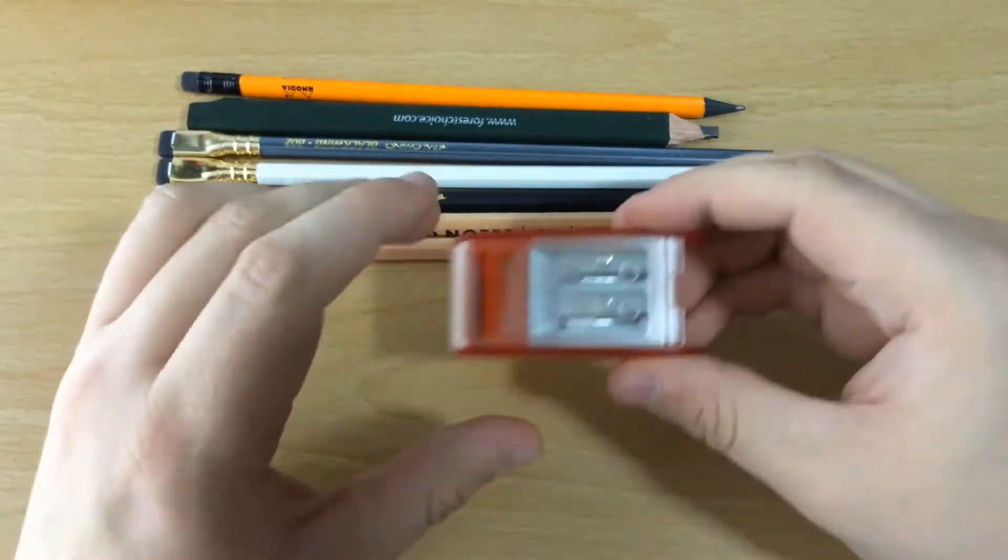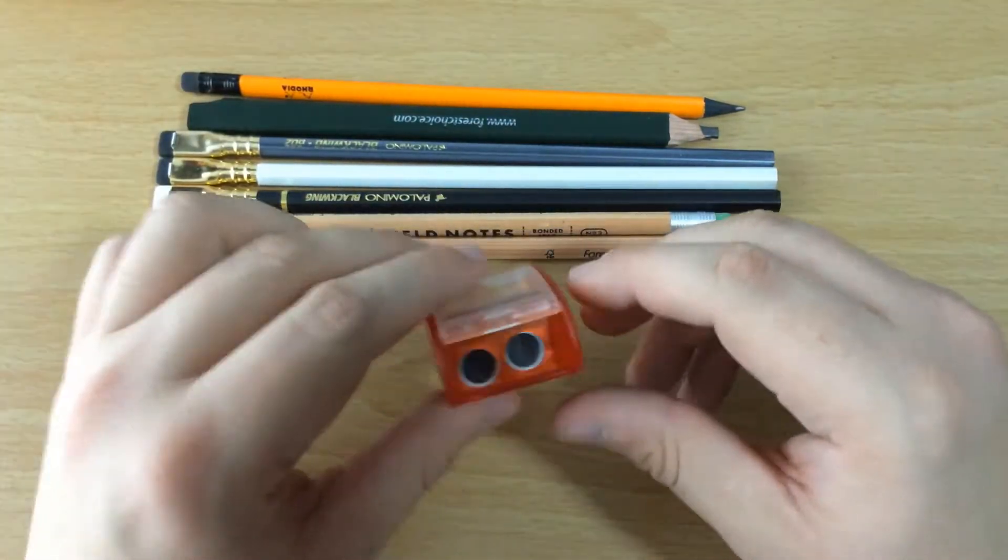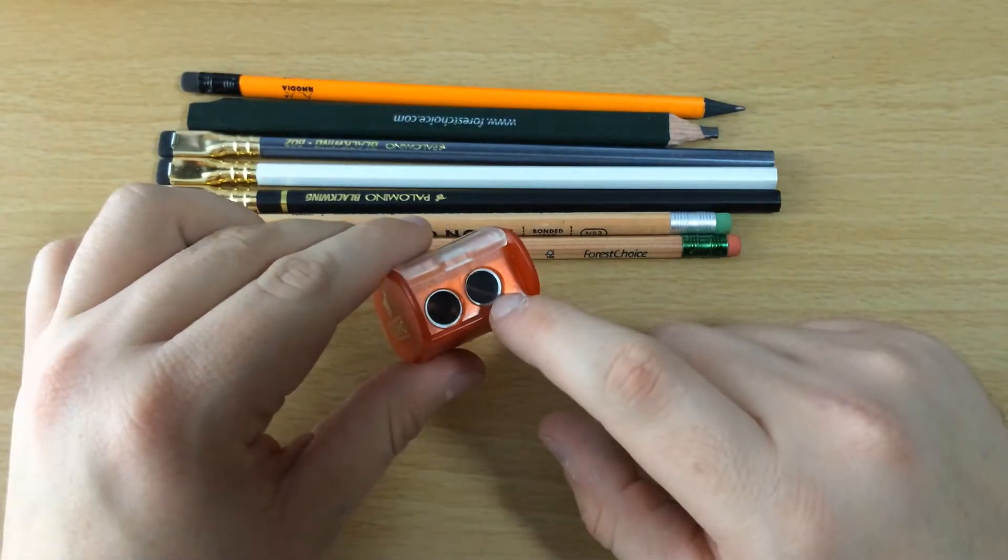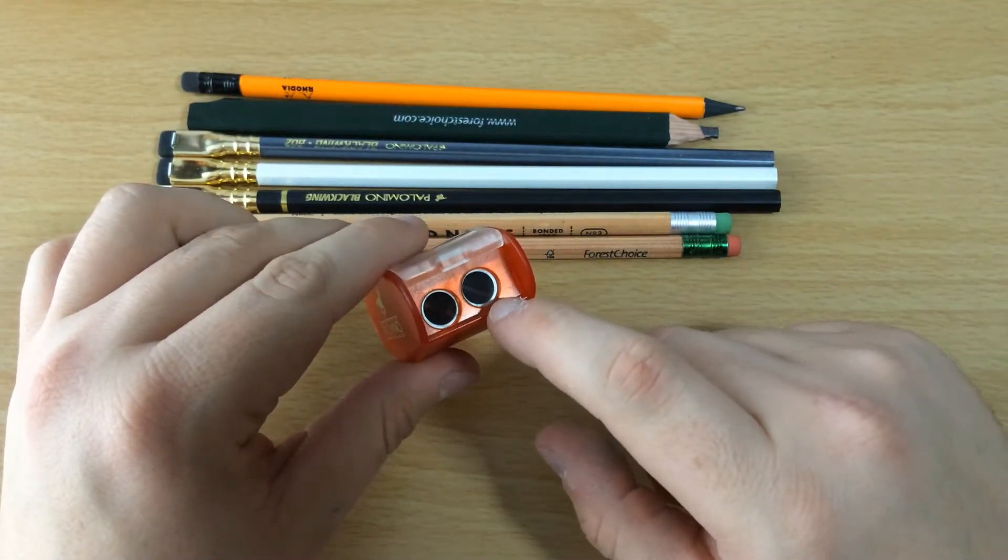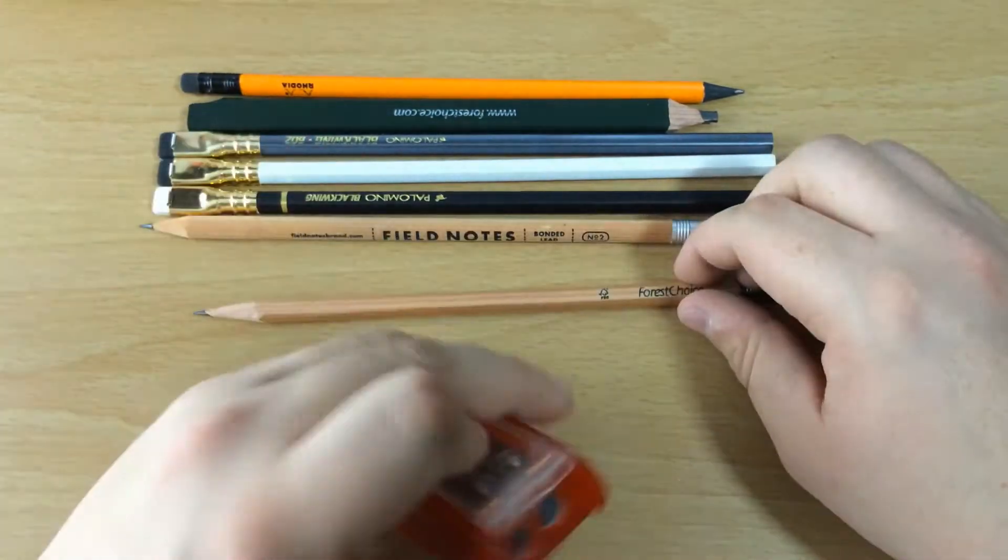So how the actual two-step process works, it's pretty simple actually. The first one shapes the wood. The second one shapes the point or the lead inside. It doesn't have to be the Blackwing or Palomino pencils. It can be pretty much any pencil.